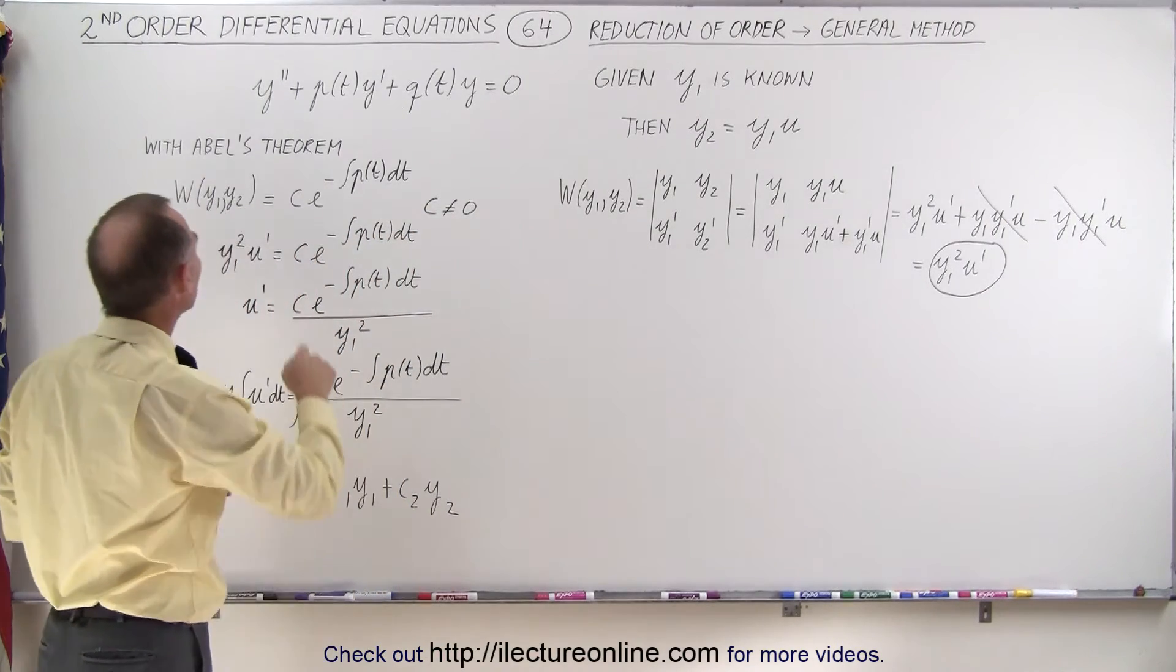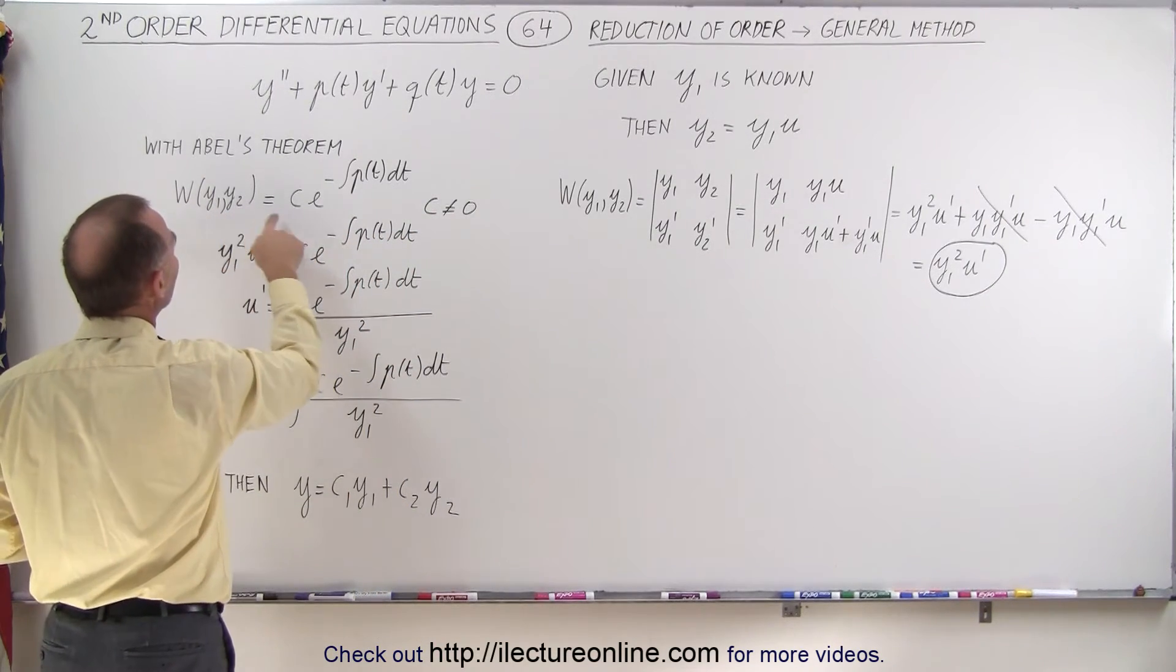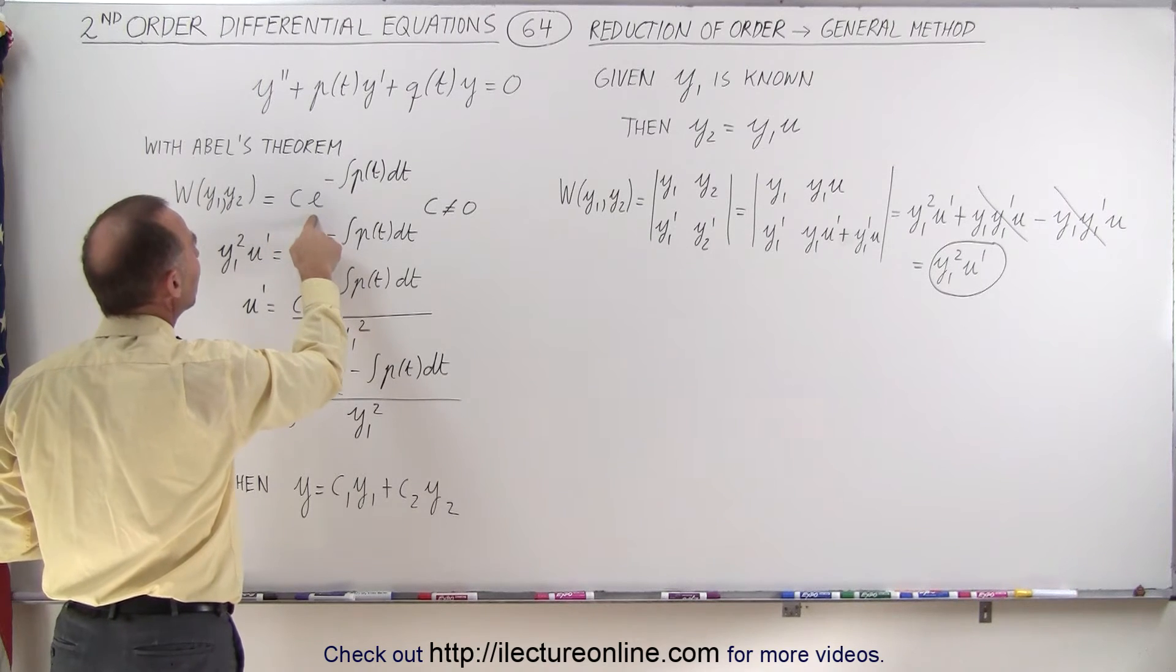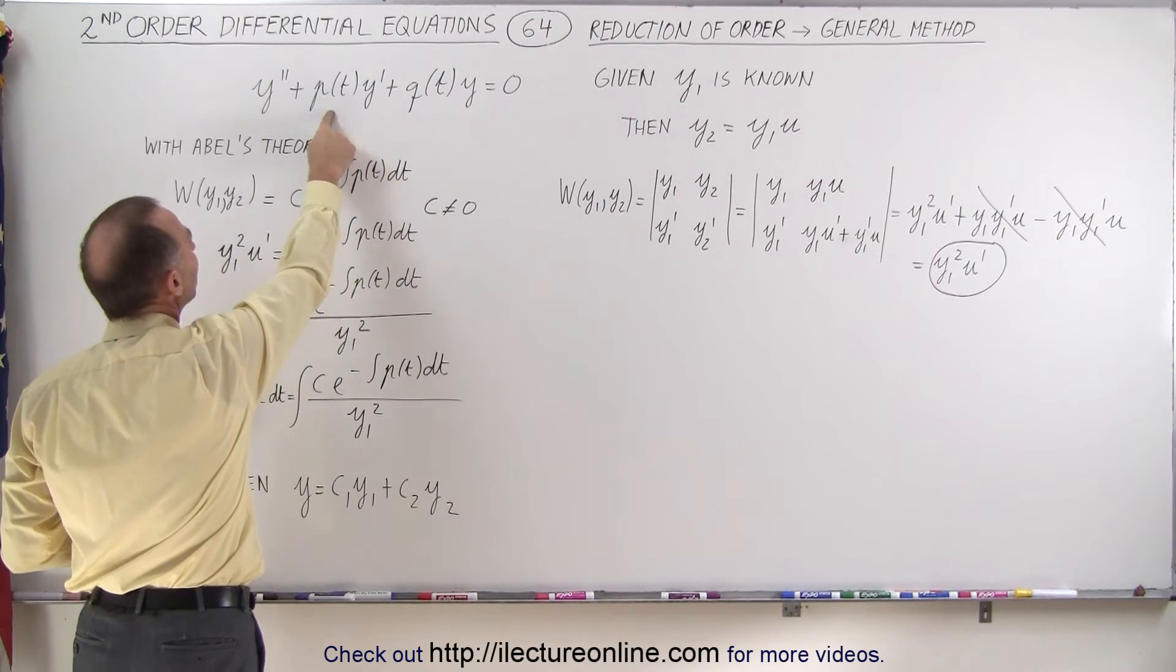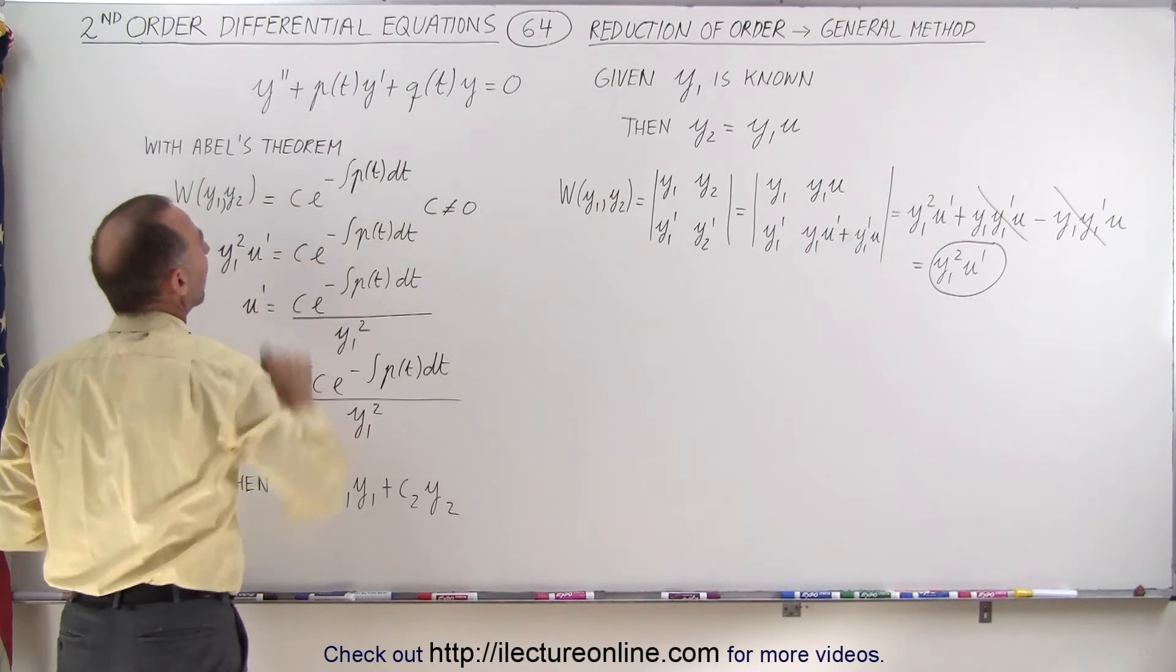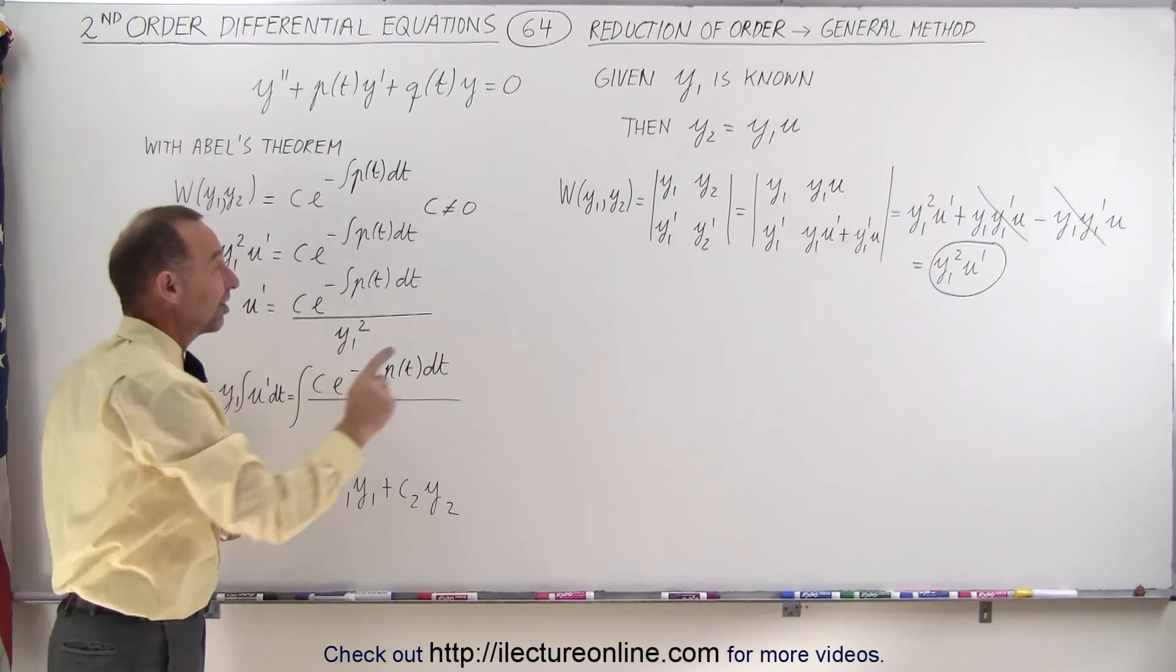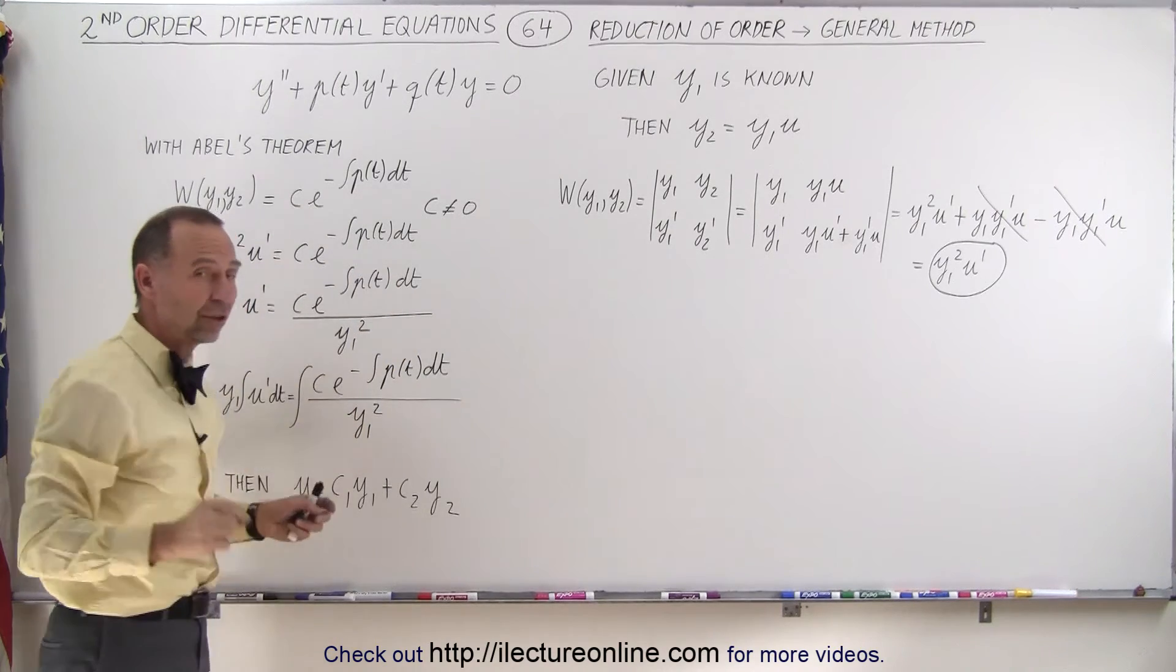Using Abel's theorem, we can also say that the Wronskian is equal to some constant times e raised to the exponent minus the integral of p of t dt, where p of t is the coefficient of the y prime term. Of course, considering that c cannot equal zero in this case.